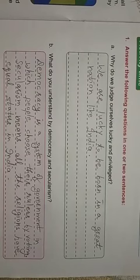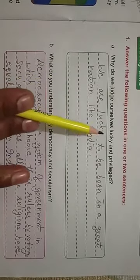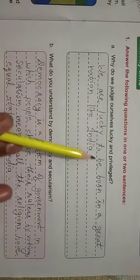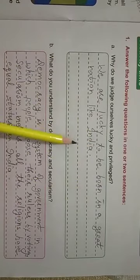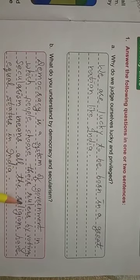As I completed your lesson number 6, Indian Social Values, let's move to the exercises. Everyone open page number 27. Why do we judge ourselves lucky and privileged? We are lucky to be born in a great nation like India. What do you understand by democracy and secularism? Democracy is a system of government in which people choose their leaders or rulers by voting. Secularism means all the religions have equal status in India.